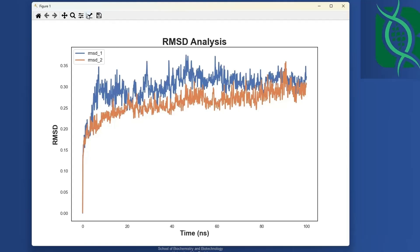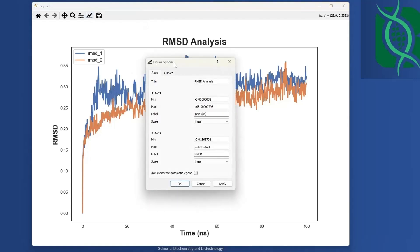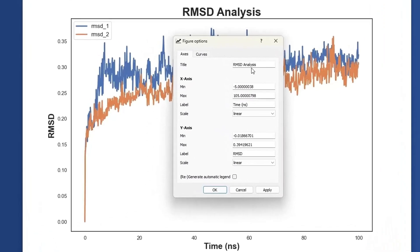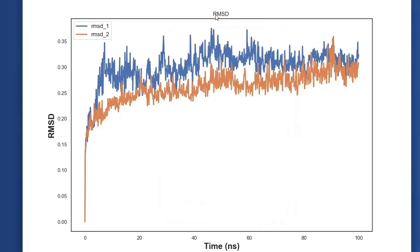Above the plot, there are different functionalities you can use. One important functionality is the arrow button. When you click on the arrow button, a dialog box will appear giving you the liberty to change many things on the plot. For example, you can change the title of the plot. Currently the title is RMSD analysis. Let's change it to just RMSD by removing the word analysis and clicking apply. As you can see, the title has now changed from RMSD analysis to simply RMSD.